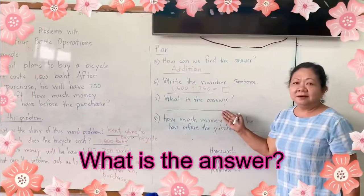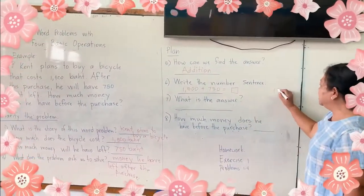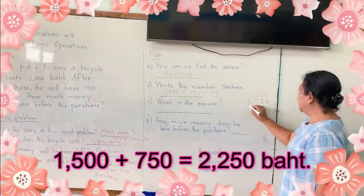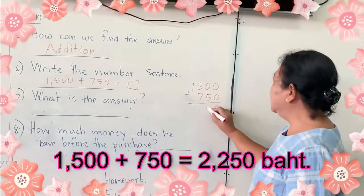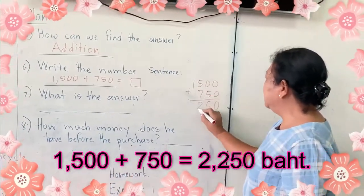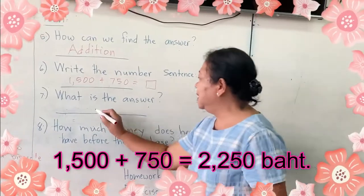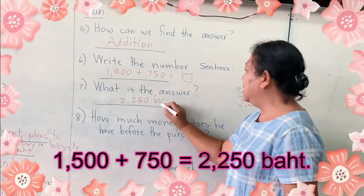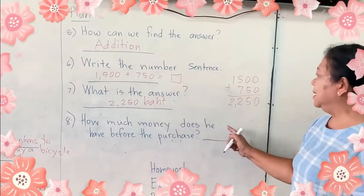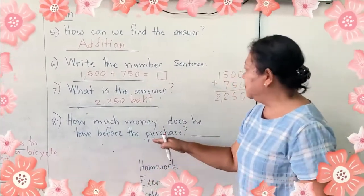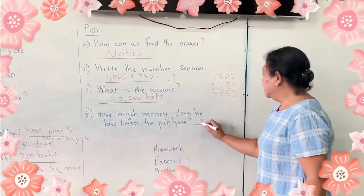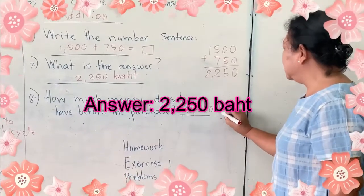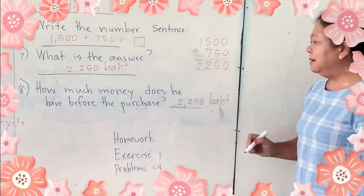Number seven: what is the answer? You will get a separate sheet of paper and add 1,500 plus 750. The answer is 2,250 baht. So the money before the purchase is 2,250 baht.